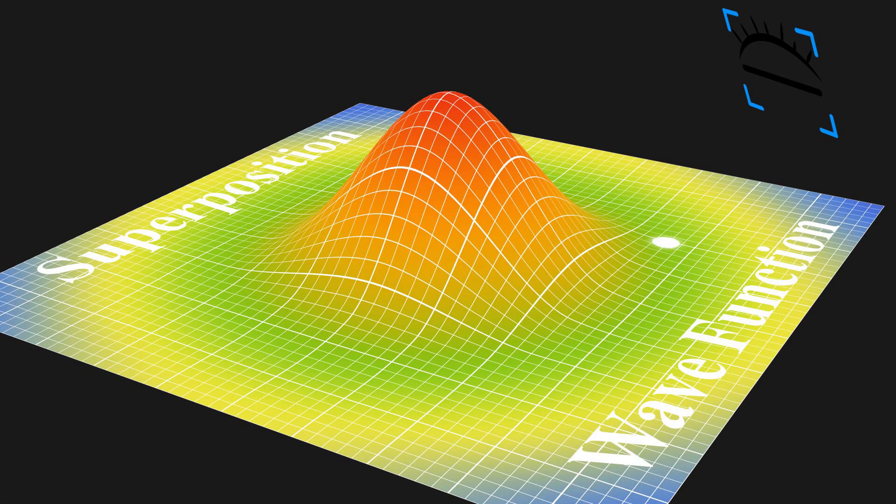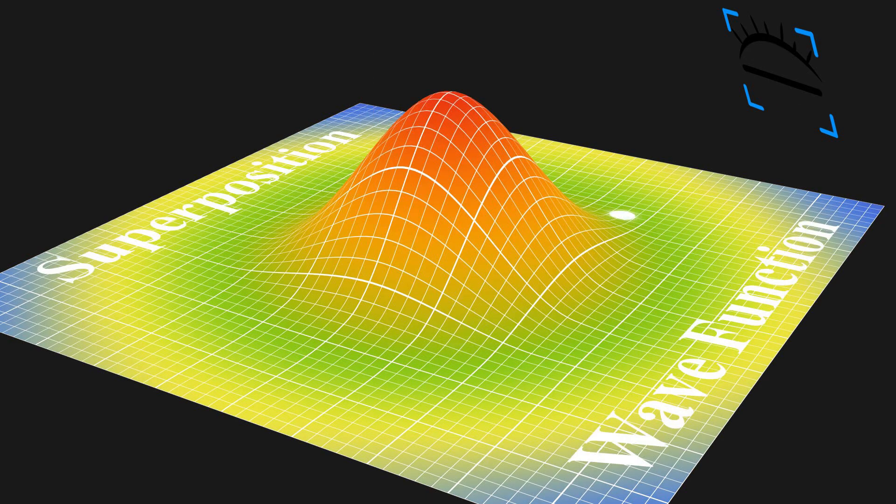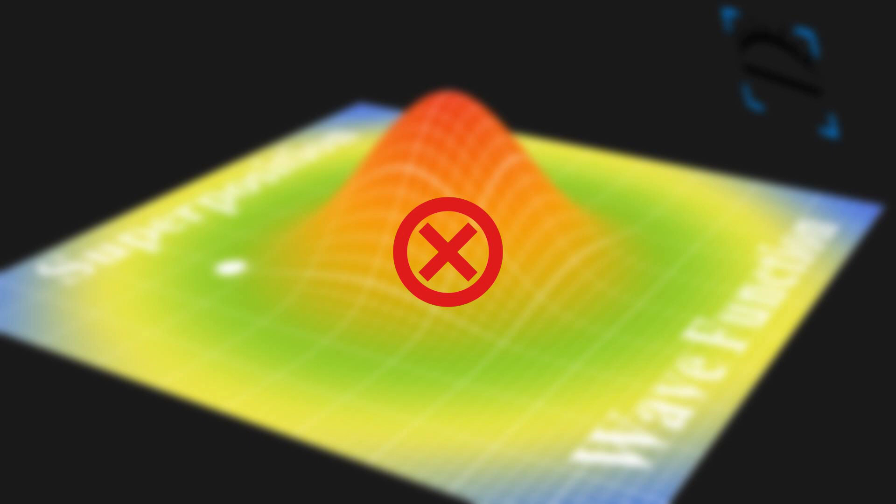The Copenhagen interpretation lacks a clear explanation for this transition. Why did the wave function collapse happen? What is the mechanism behind this process? While the theory successfully predicts outcomes, the underlying mechanisms responsible for quantum phenomena are unclear. This was just not very satisfying for me when I was a college student.